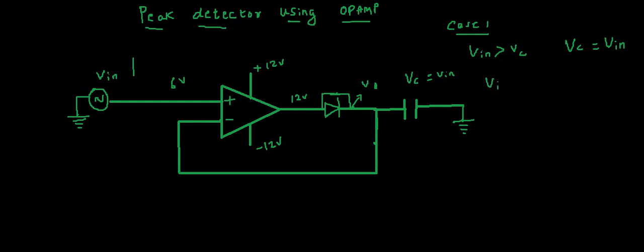Now say for some reason V in becomes less than VC. V in will become say 5 volts. At that time, 6 volts is greater than 5 volts. So this op-amp will give us minus 12 volts, the negative saturation voltage. Because op-amp again acts as open loop configuration, it will give us minus 12 volts, which means it will make the diode off. That path is now absent.